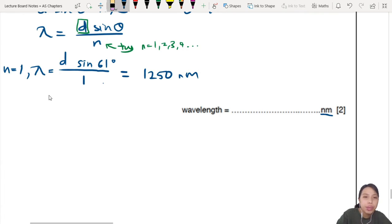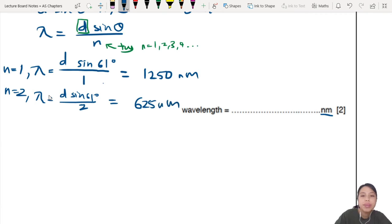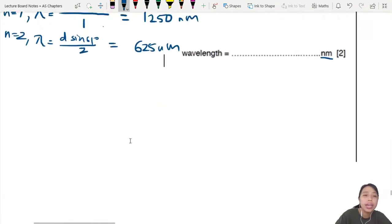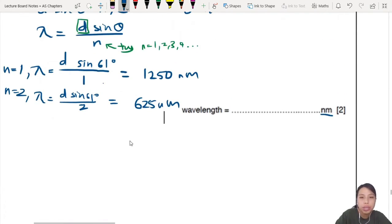n equals 2. Actually they say don't use n equals 2. But if you calculate D sine 61 over 2, you will get back your good old 625 nanometer. That is the same as this one. 625 nanometer, the first question. But this one they say another order. So let's not use n equals 2. So we can't use that.